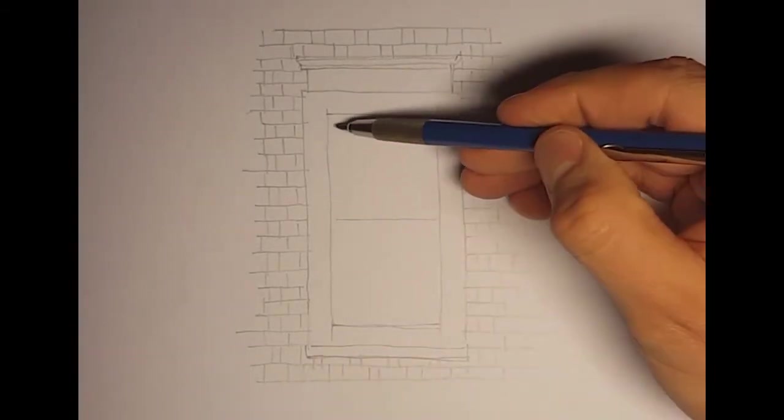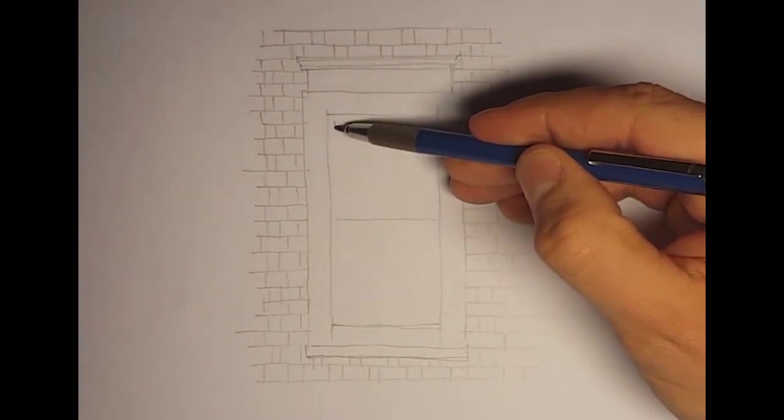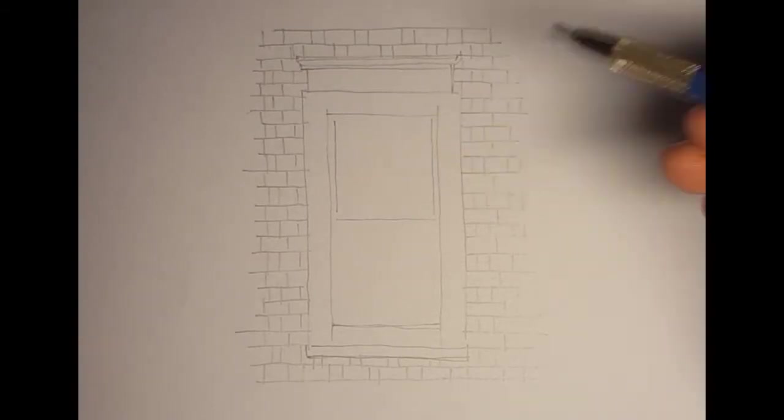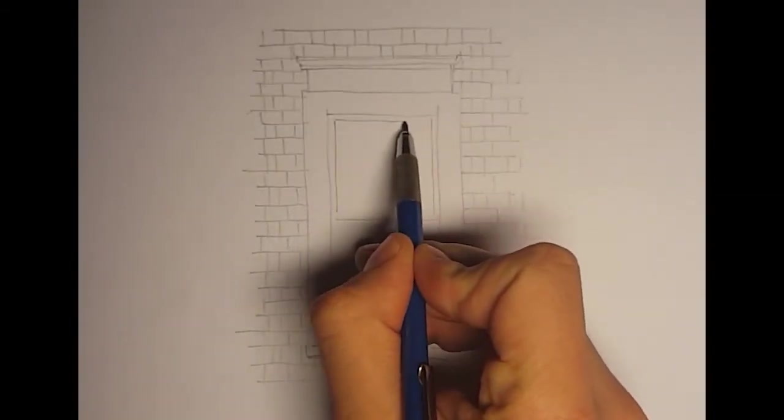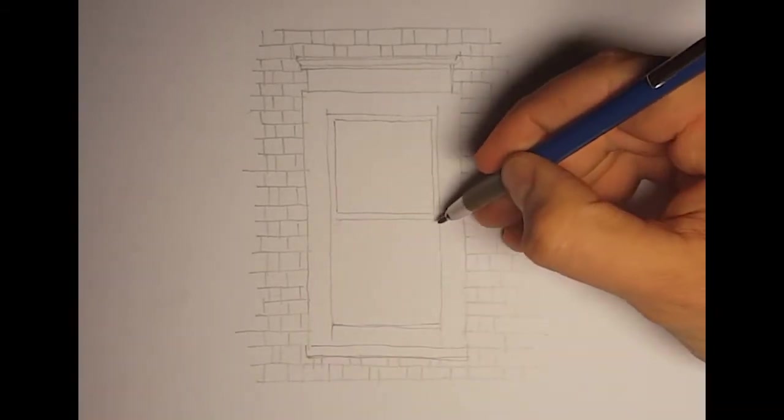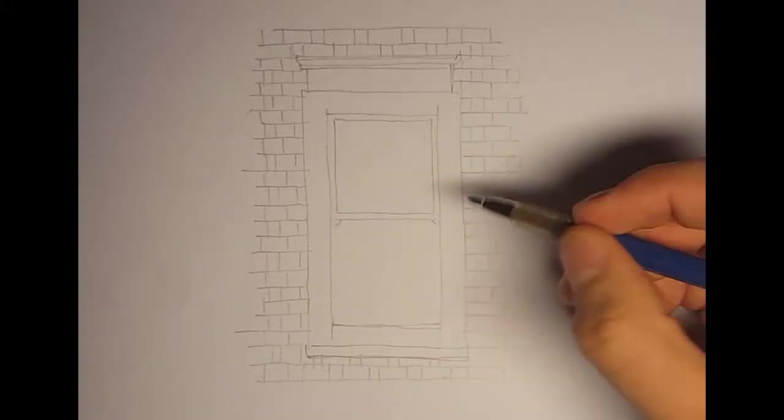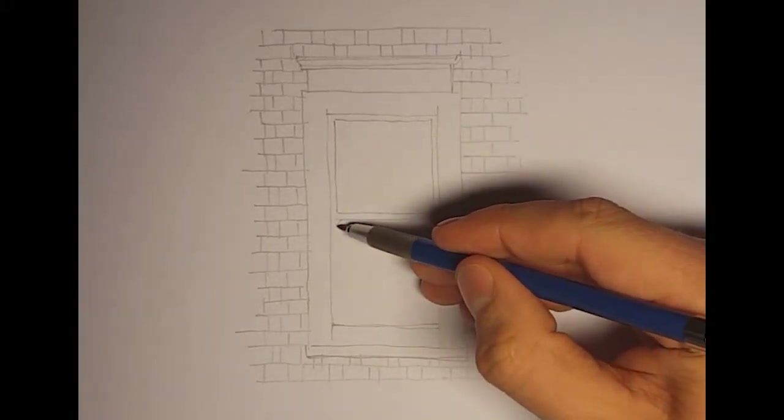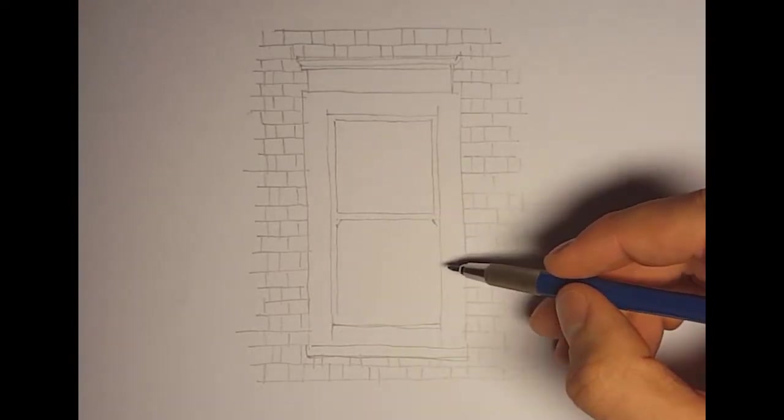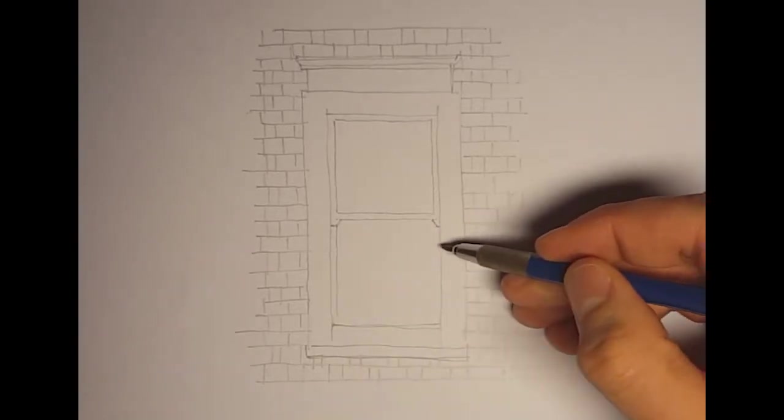It's a sash window meaning it opens upward. There's a fixed frame to it which I'm drawing at the moment. This frame doesn't move. This is the top part which doesn't move. There's a small detail, usually chamfers like so, and this one actually overlaps on top.